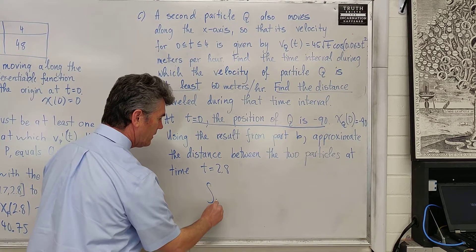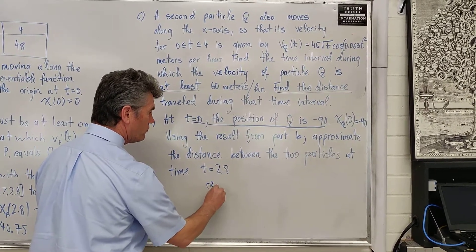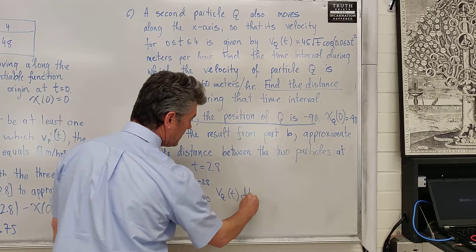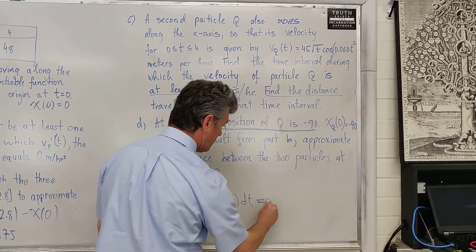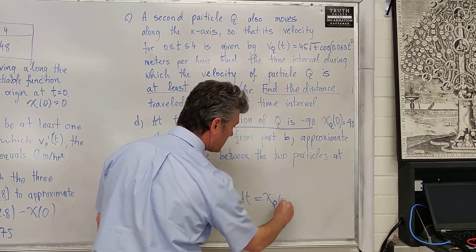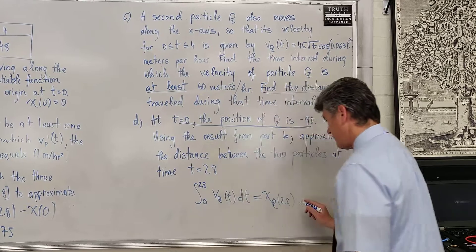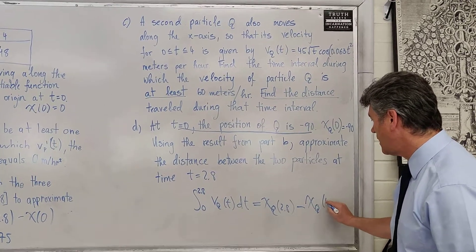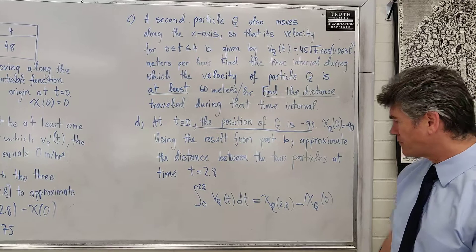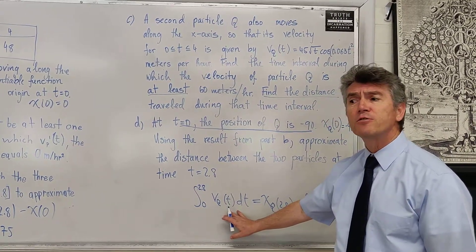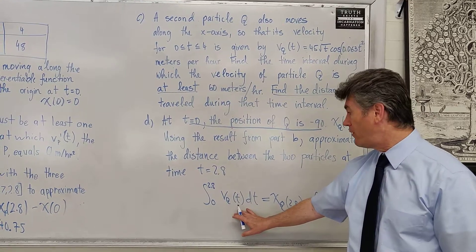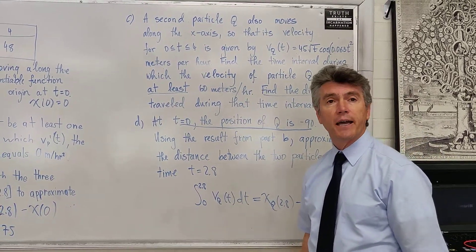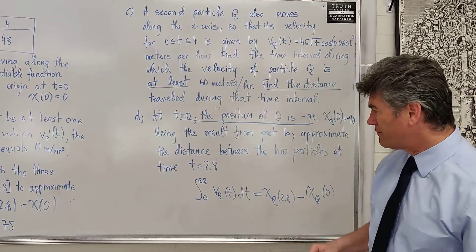How do we find the position of particle Q at time t=2.8? We need to find the definite integral from 0 to 2.8 of V sub Q of t dt. This equals the position of particle Q at time 2.8 minus the position of particle Q at time t equals 0. To find this information, we're going to use our graphing calculator. Everything is set up, so let's do that.